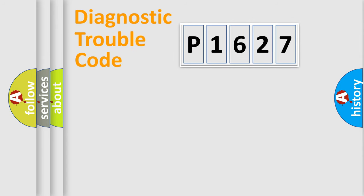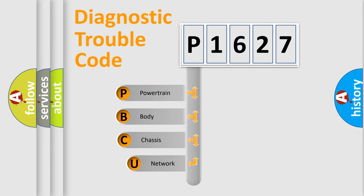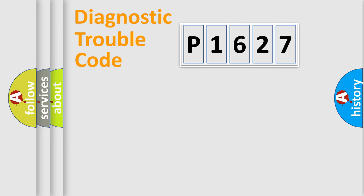Let's look at the history of diagnostic fault code composition according to the OBD2 protocol, which is unified for all automakers since 2000. We divide the electric system of an automobile into four basic units: Powertrain, Body, Chassis, and Network.